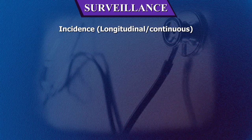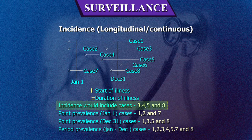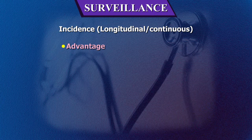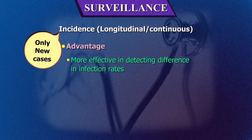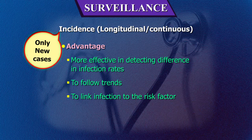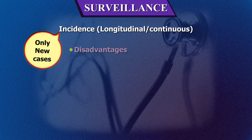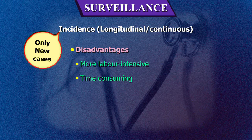Incidence (longitudinal or continuous) surveillance is the number of new cases of healthcare-associated infections that occur in a defined population during a specified time period. Advantages: more effective in detecting differences in infection rates, following trends, linking infection to risk factors, and useful in inter-hospital and inter-unit comparison. Disadvantages: more labour-intensive, time-consuming, and costly, and therefore usually undertaken for selected high-risk units.